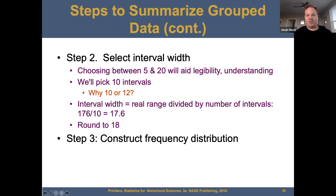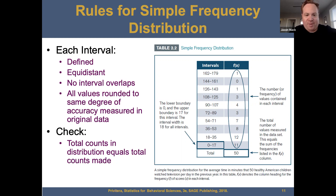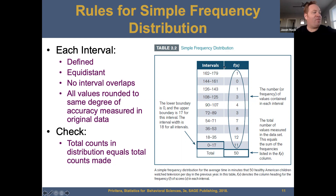So some rules for simple frequency distribution: each interval is defined equidistant — they have to be the same. No interval overlaps. All values are rounded to the same degree of accuracy measured in the original data. You check the total counts in the distribution to the total number of counts made. Here are your intervals and the frequency — the number of values contained in each interval. The lower boundary is 0 and the upper boundary is 17 for this interval. The interval width is 18 for all intervals.